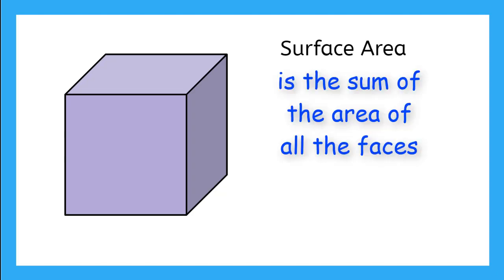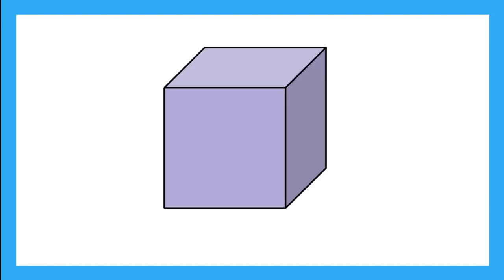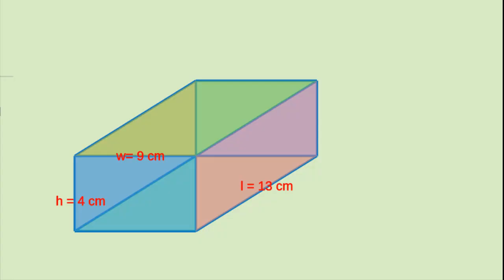The surface area is the area of all the faces on a solid figure added together. It can be tricky to think about finding the area of all the faces of a solid object, especially when we can't even see all the faces. So here I have a rectangular prism. If I want to find the surface area of this rectangular prism, I need to find the area of each face. So let's take the faces apart.